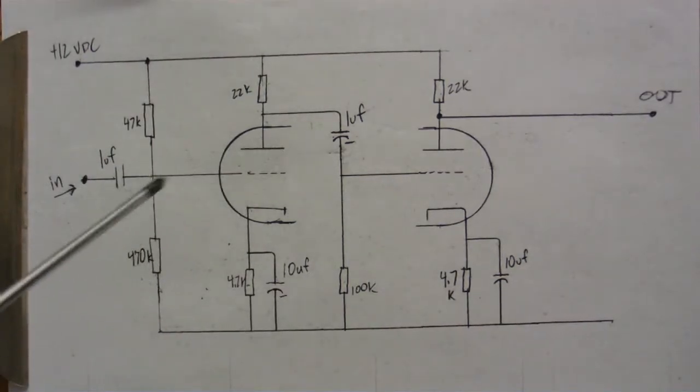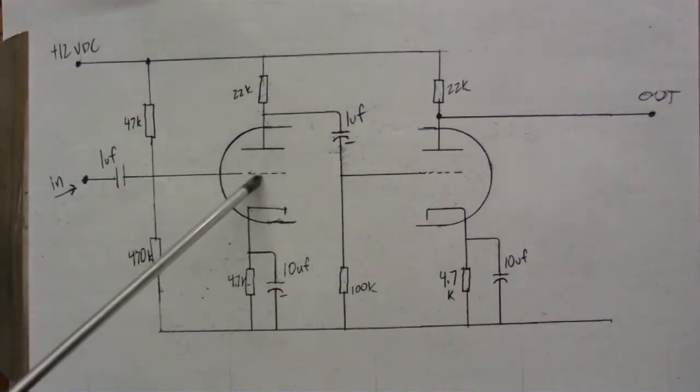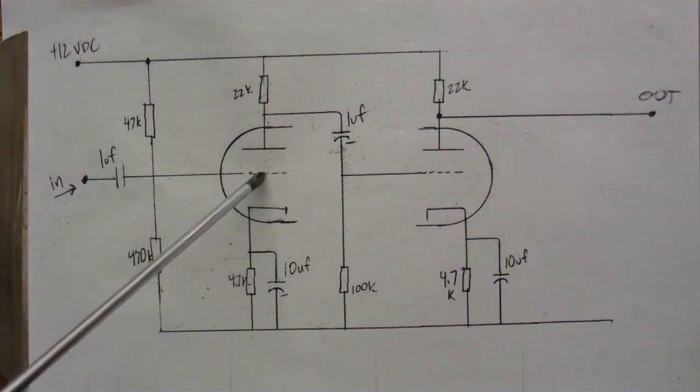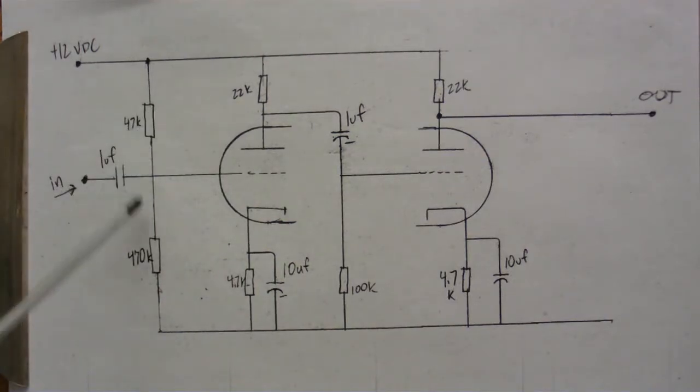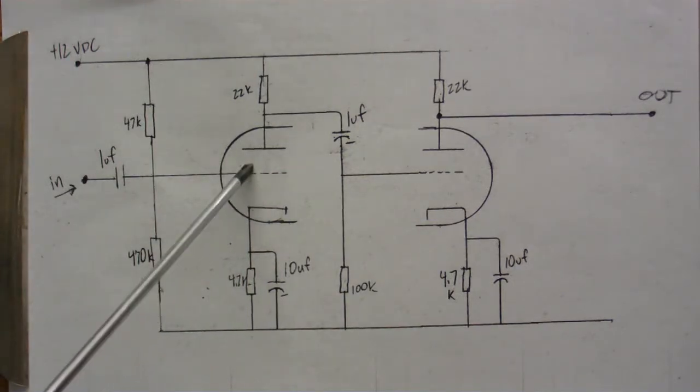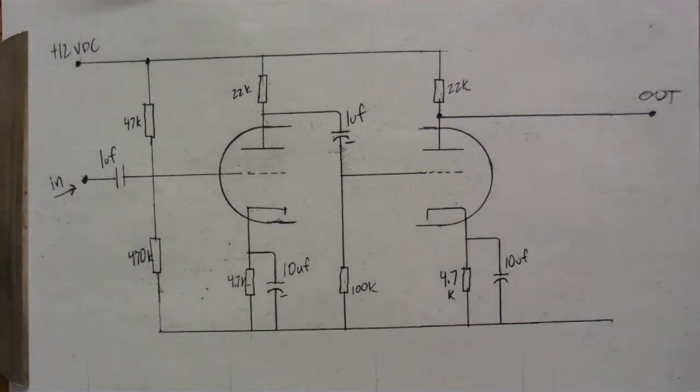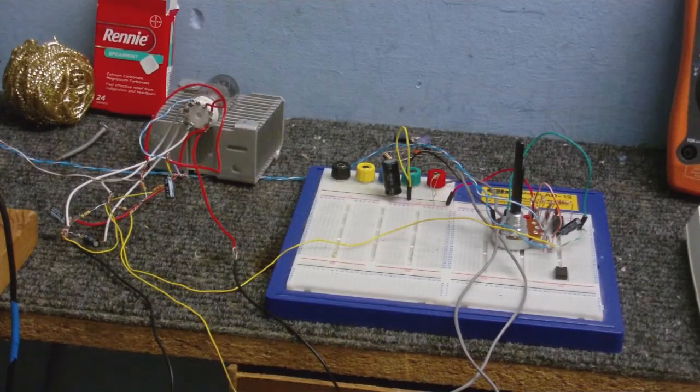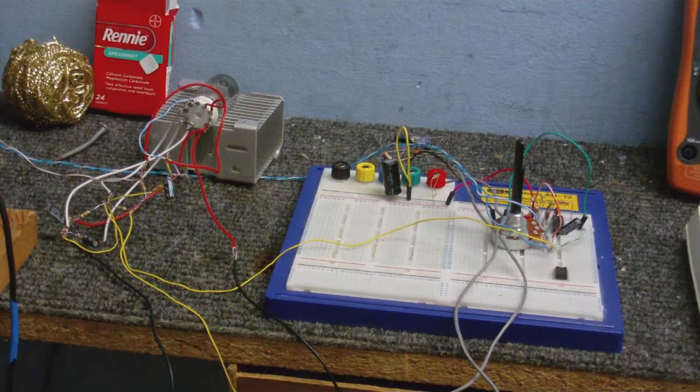The grid is biased in an unusual way because it's biased positive instead of negative by these two resistors here. If you make the grid positive so it attracts electrons, you can power the tube from a low voltage. However, I haven't had any luck with those kind of circuits and I don't think this is going to work either, but let's build it and find out.